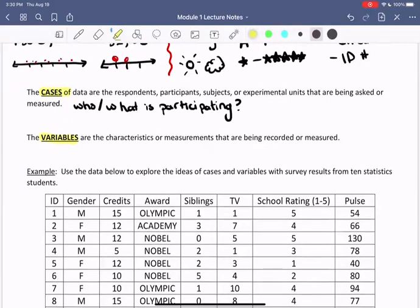And we're going to see some more examples of that. Then the variables, again, are the characteristic or characteristics or measurements that are being recorded or measured. So you can think of that as what was reported.